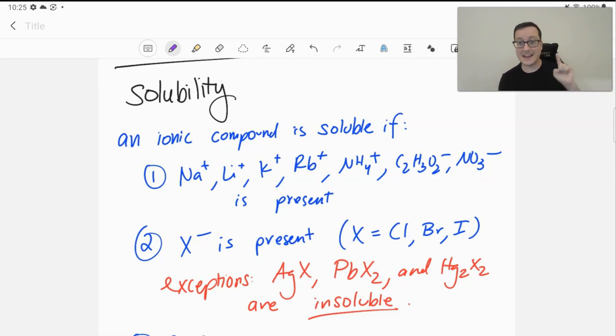Anything that has at least one of these will always be soluble. No exception. Option two: say we don't have any of those things. If we have a halide present, represented by X here, where X can be chlorine, bromine, or iodine.